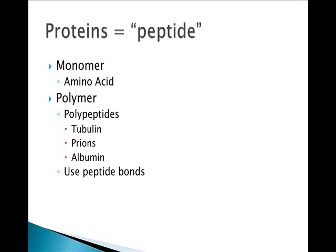Some of the polypeptides include tubulin, which you find in cells during cell division; prions, which are proteins that cause disease; and albumin, which is the protein in egg white.